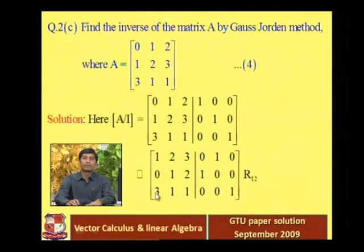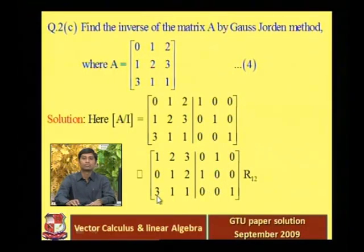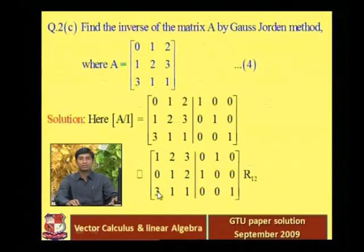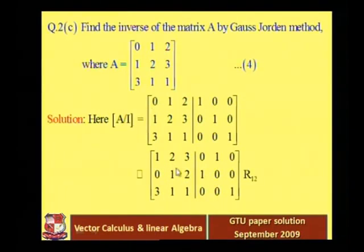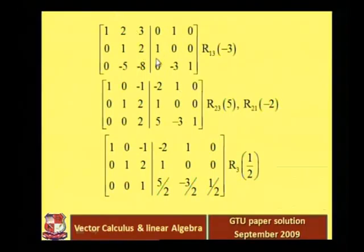So that's why we multiply the first row with minus 3 and add into the third row. We multiply the first row with minus 3 and add into the third row so those elements become zero. That is our next process. You can see the first and second rows are as they are — no change: 1 2 3 0 1 0 and 0 1 2 1 0 0.